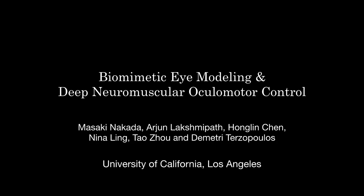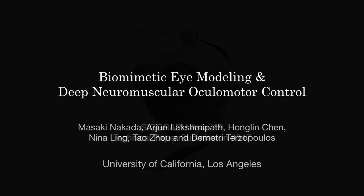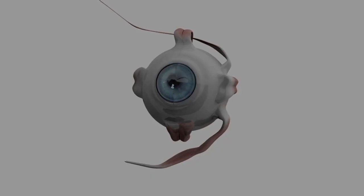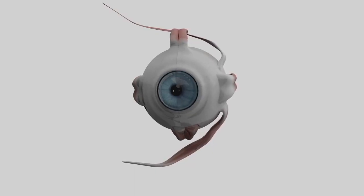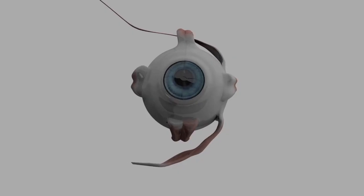We present a novel biomimetic model of the human eye and an innovative neuromuscular oculomotor control framework based on deep learning. Our muscle-actuated biomechanical eye model is fully functional, synthesizing realistic eye movements with three rotational degrees of freedom along with pupil and focal accommodation.